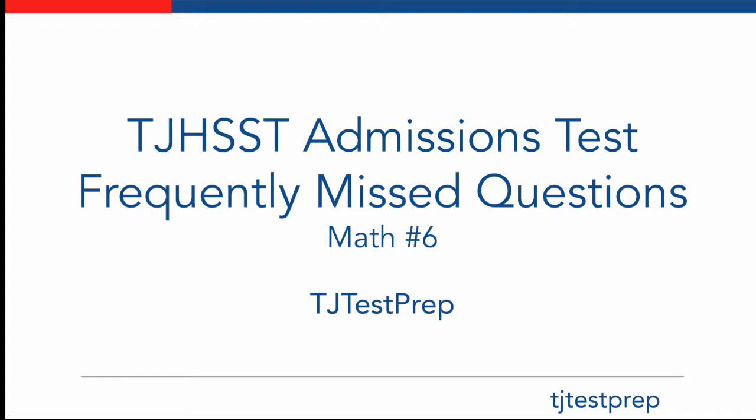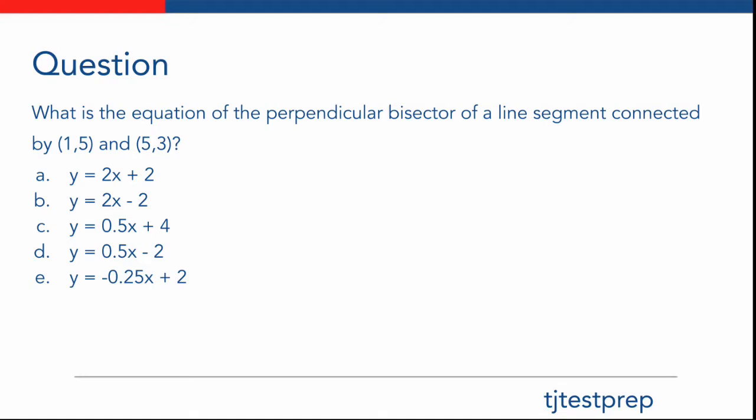If you want to learn more about our practice proctored exams or register for them, please go to tjtestprep.com. Now on to the problem. We are asked: what is the equation of the perpendicular bisector of a line segment connected by the points (1, 5) and (5, 3)? Answer this question by yourself first and come back for the answer and the solution.